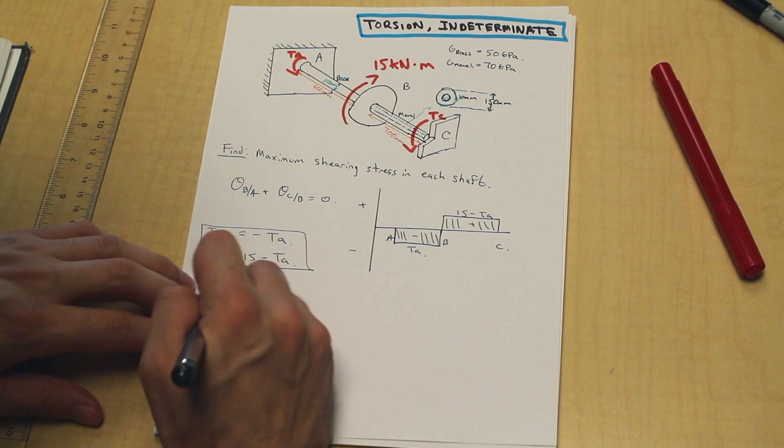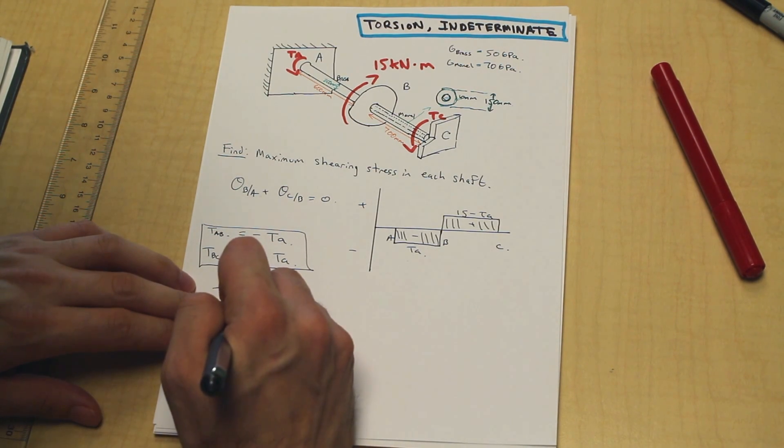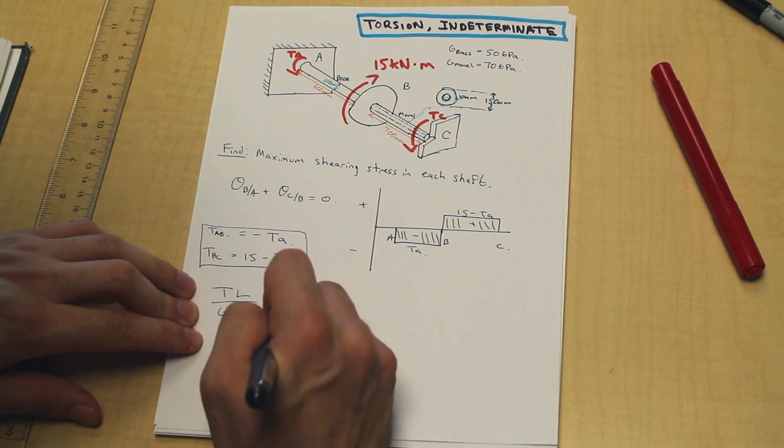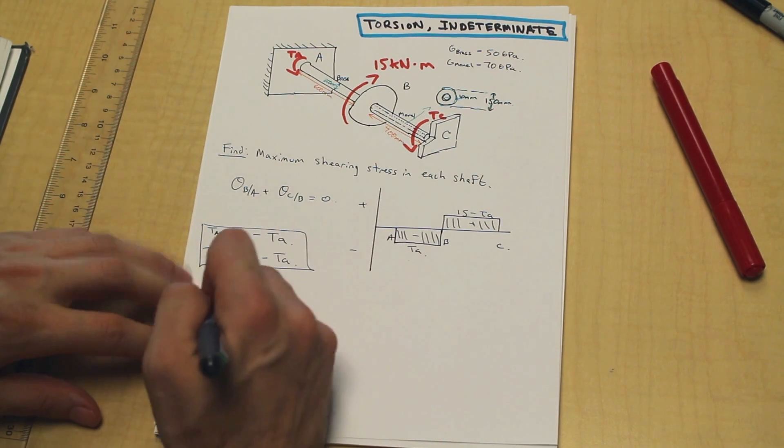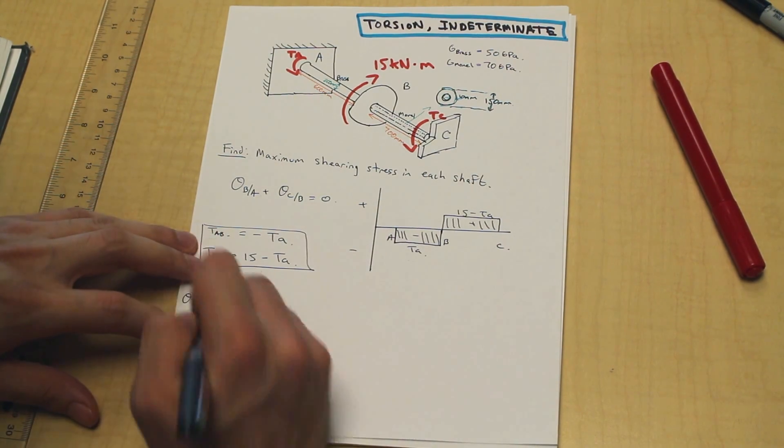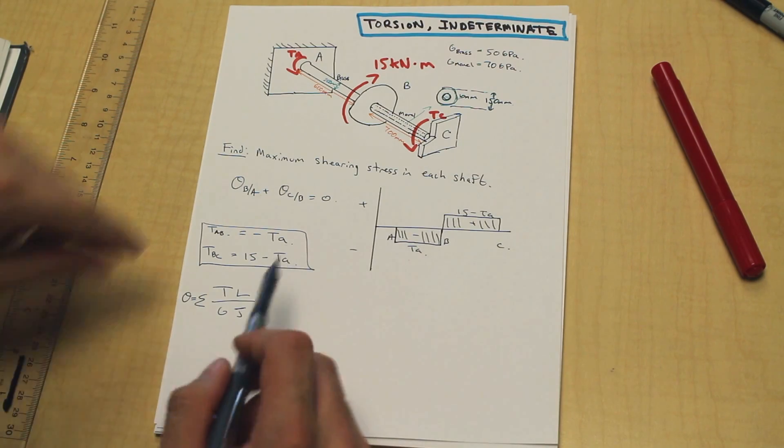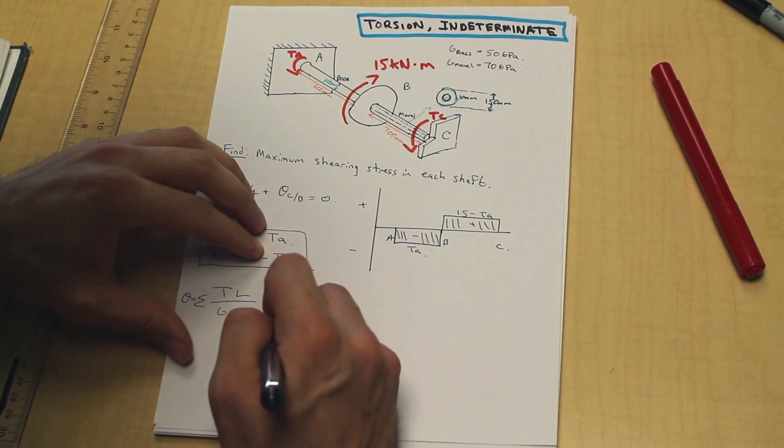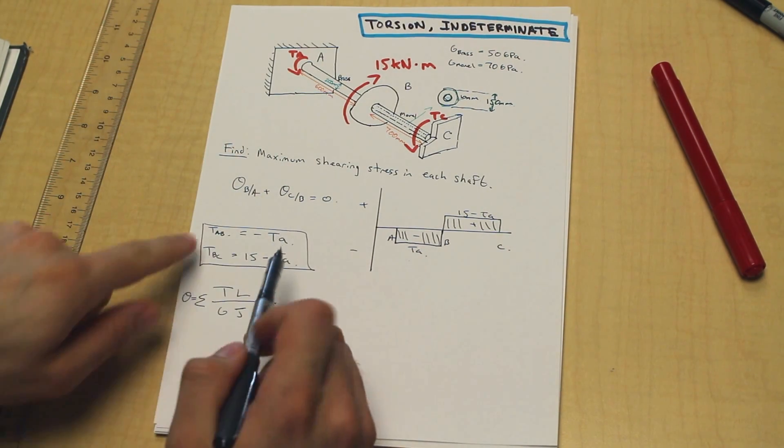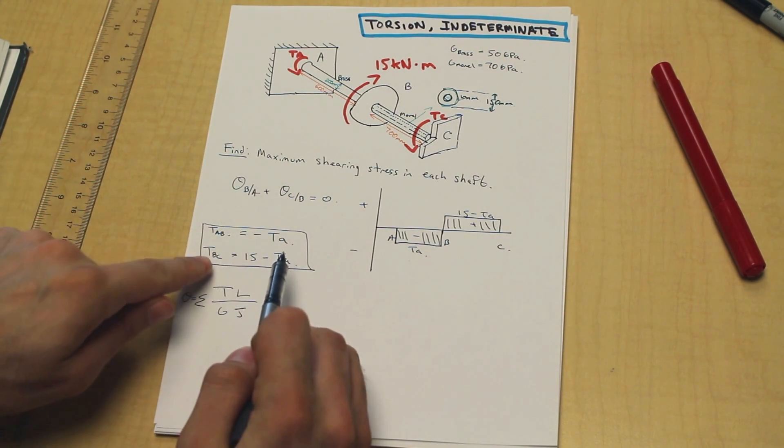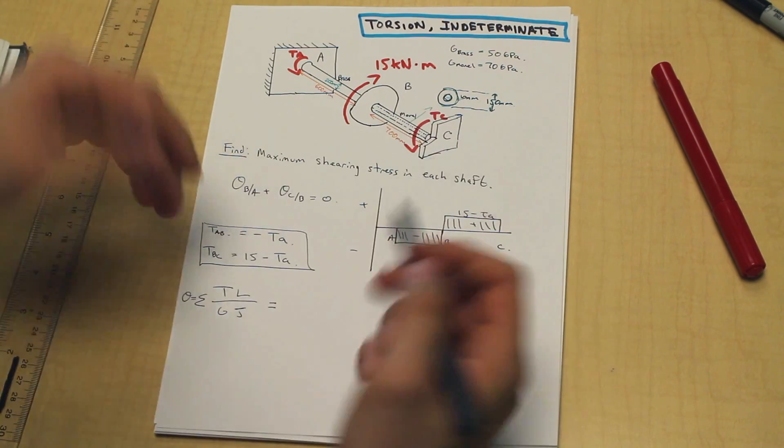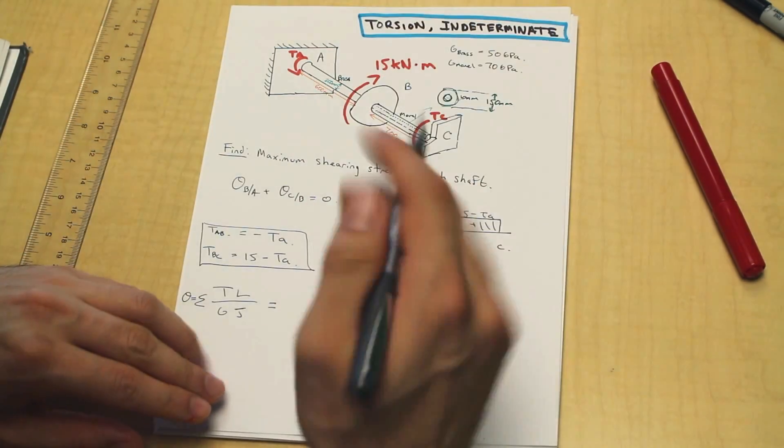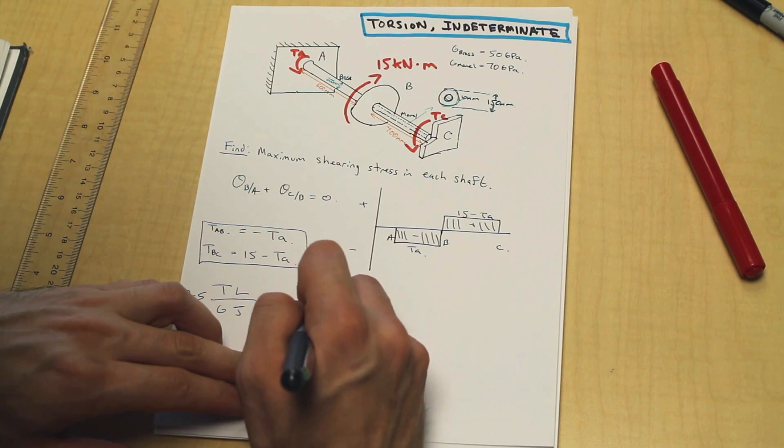And what we're going to do now, after having drawn our torque diagram here, is we're going to plug into our angle of twist equation. So, let's write that out. Okay, so theta is equal, and you know, we've discussed this many times before, TL over GJ.